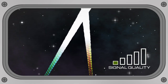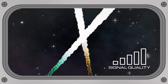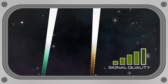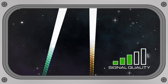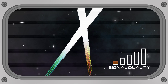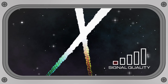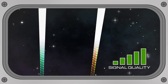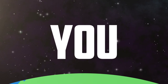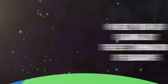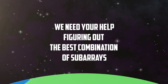However, sometimes the beams are too close together, which causes interference and degrades the quality of the signal. This leads to unnecessary power consumption, more costly operations and, ultimately, poor results. This is where you come in — we need your help figuring out the best combination of subarrays to cover the most tracks with the best quality and power possible.